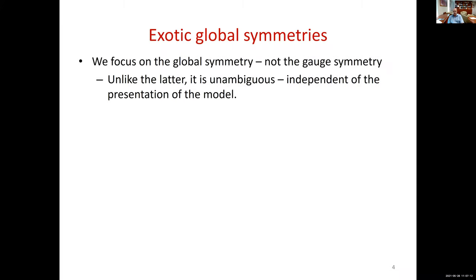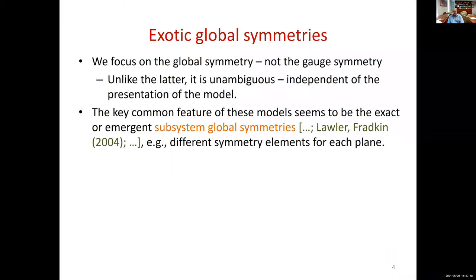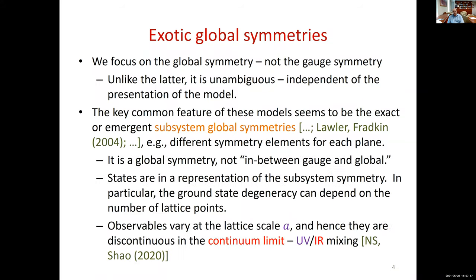It doesn't matter which degrees of freedom you use, whether you use Lagrangian or Hamiltonian formulation, you can dualize the system and so forth. The global symmetry remains the same. So we're going to focus on the global symmetry, not the gauge symmetry. It is unambiguous and independent of the presentation of the theory. Now I tried to track back the origin of subsystem symmetry. The earliest paper I found is by Loro and Pratky, but for all I know there could be earlier references, and there's of course a lot of follow-up work. An example is different symmetry elements acting on different planes, but it could be more complicated.